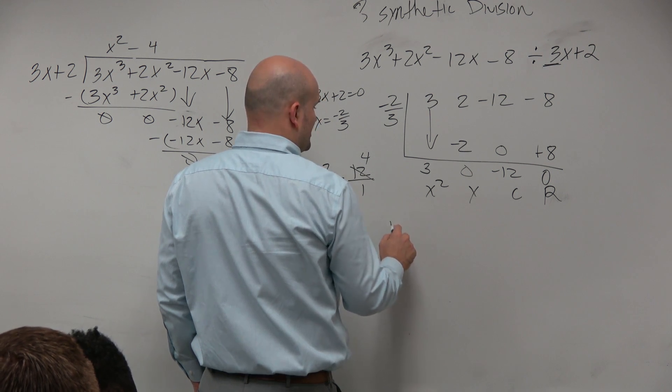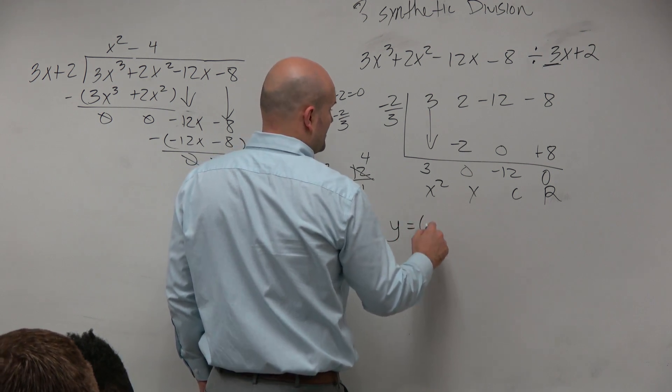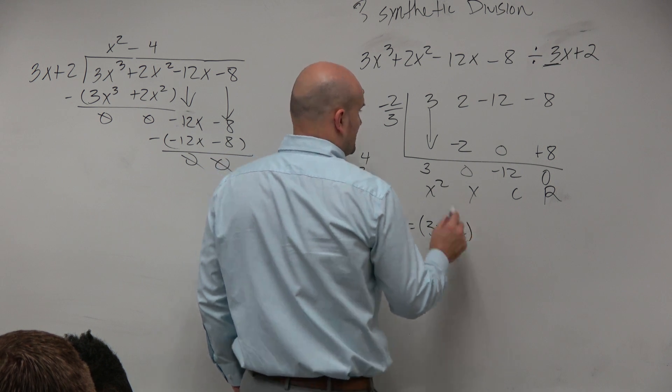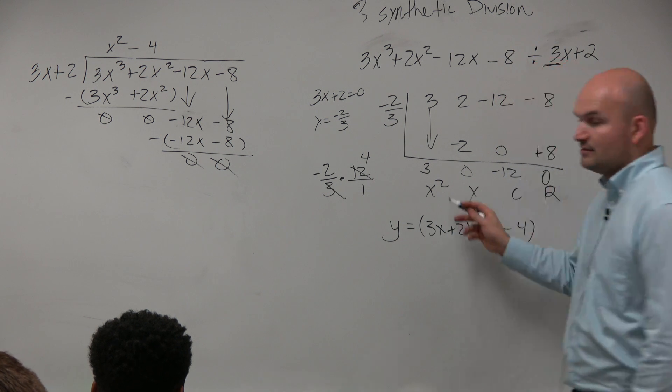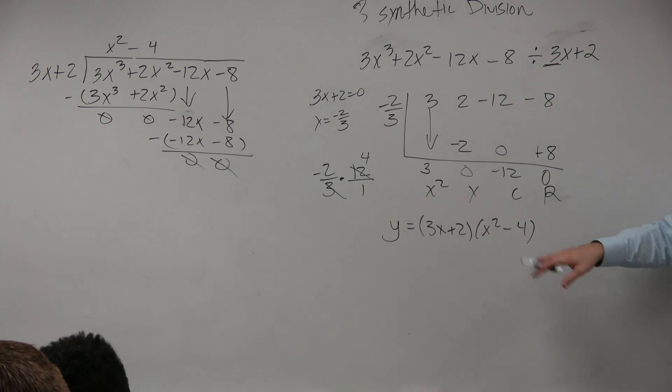if I want to find all the zeros, or I could write this as linear factorization, 3x plus 2 times the quotient x squared minus 4, right? Because what I did is I divided it by 3.